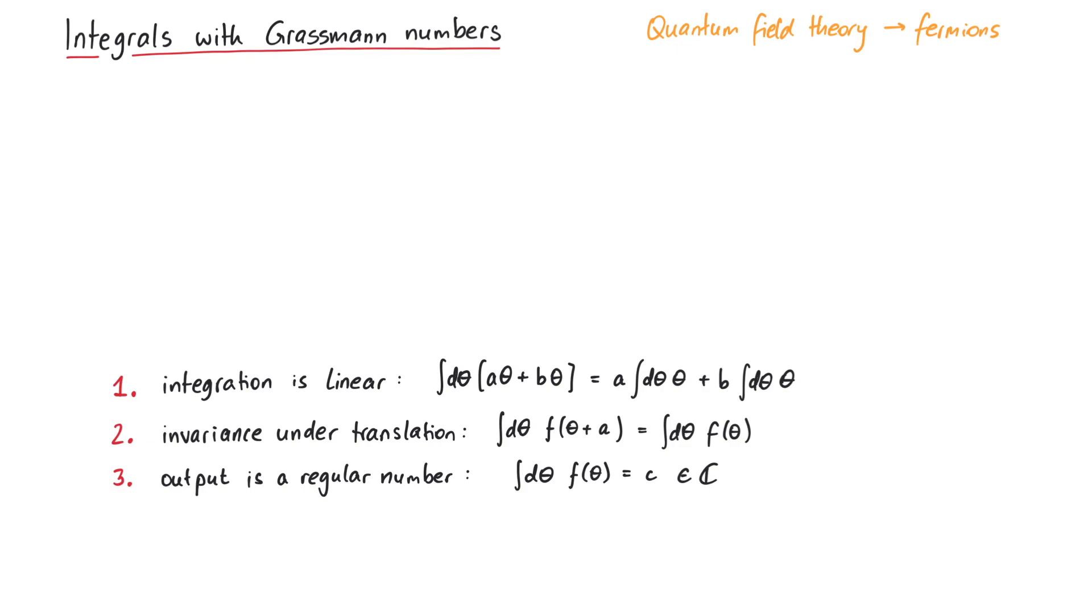Now let's see how these conditions help us. From the second one, translational invariance, we can get the following equation, where a0, a1, and b can be any complex number.